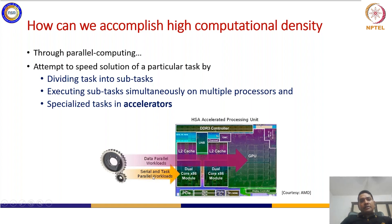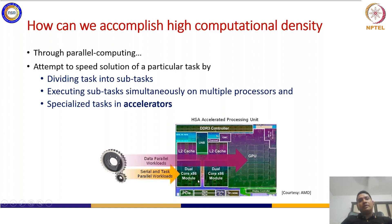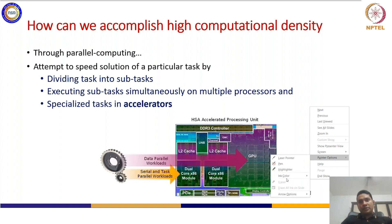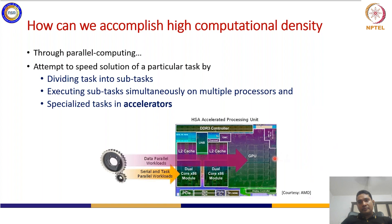In heterogeneous computing, the serial tasks or mostly the parallel workloads which are not that data-intensive are being controlled or executed by the processor itself. That might be a multi-core processor or a single-core processor. In this particular figure, you are seeing a dual-core processor. In addition to processing engines, to get the data parallel workloads executed, we have specialized computing engines.